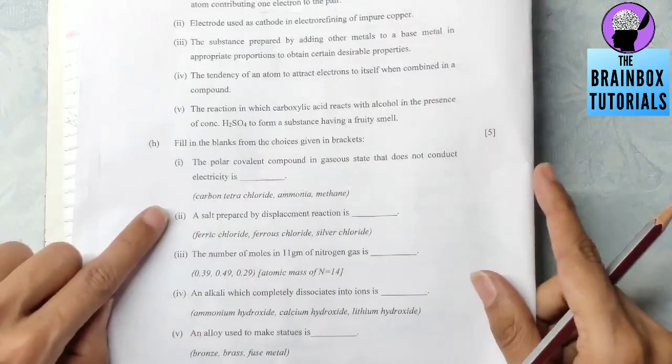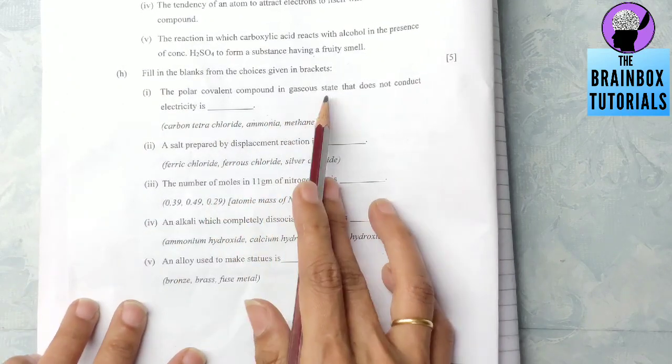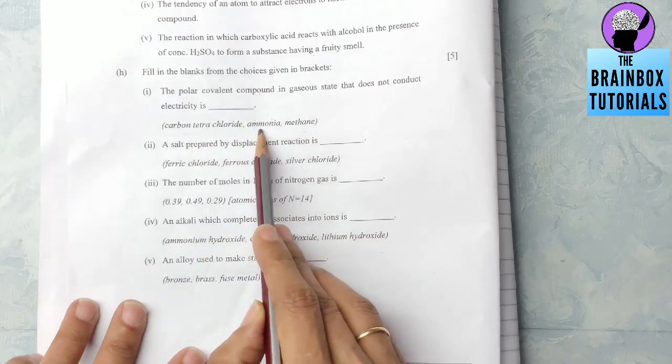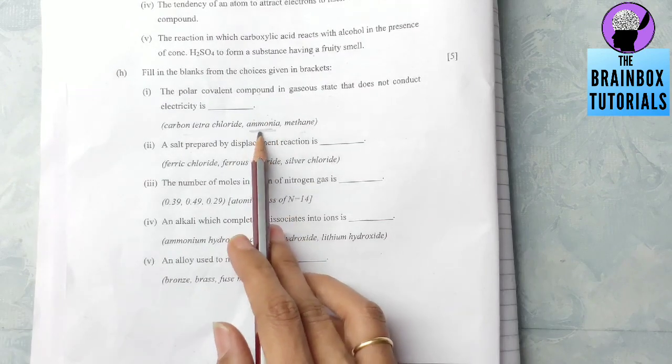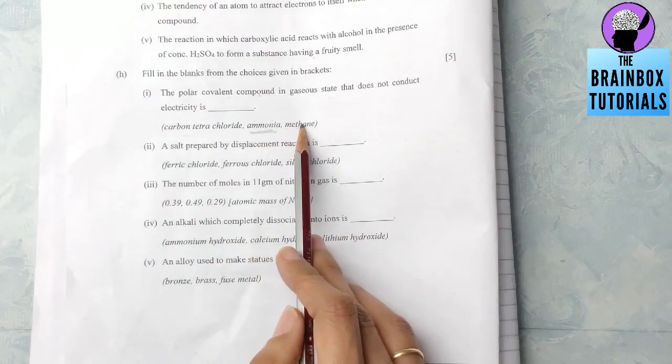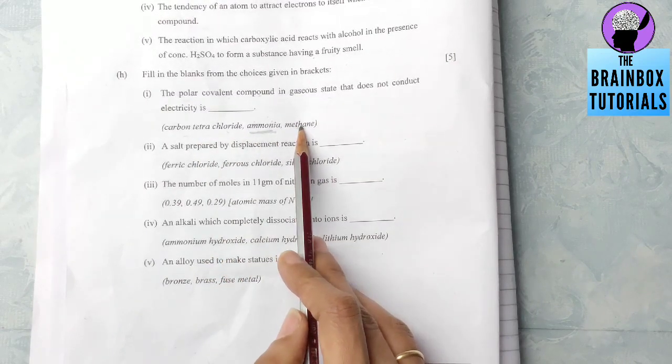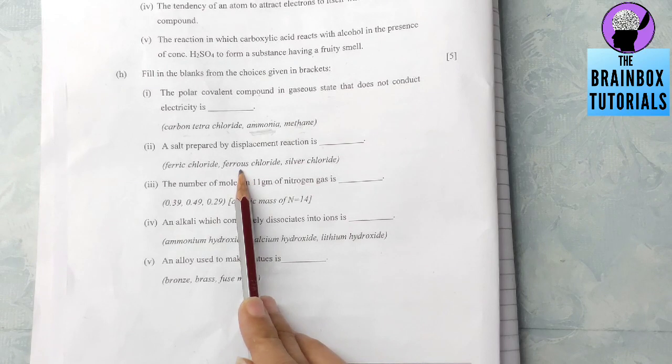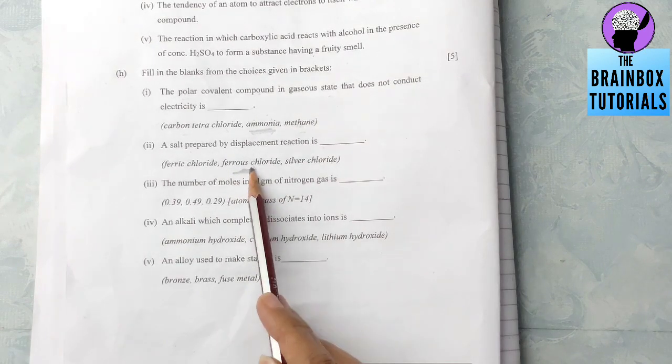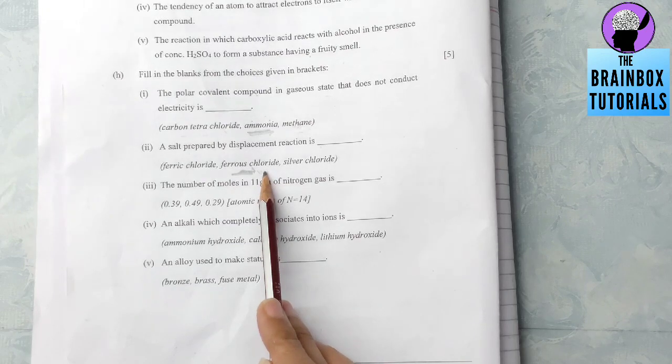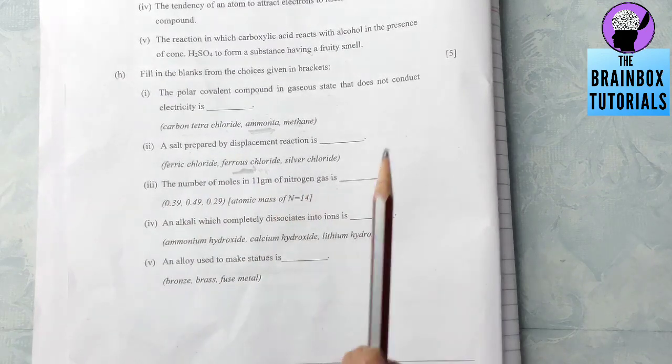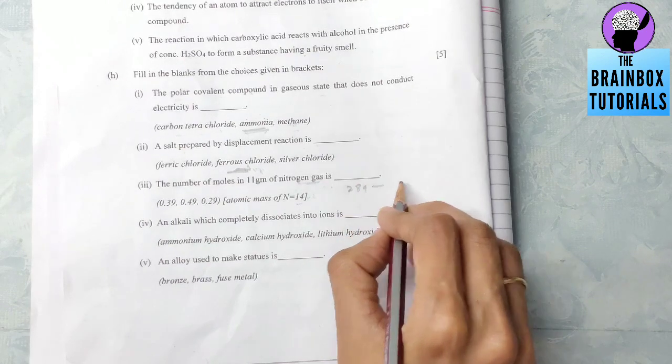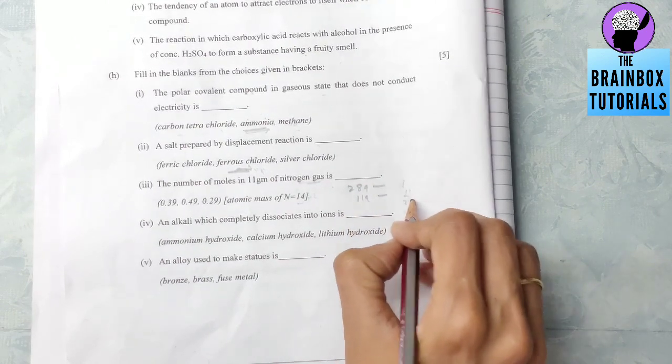Part H: Fill in the blank. The polar covalent compound in gaseous state that does not conduct electricity. Ammonia is polar covalent and in gaseous state, so ammonia is the answer. Number two: a salt prepared by displacement reaction. This would be ferrous chloride - Fe plus HCl gives FeCl2. Number three: number of moles in 11 gram of nitrogen gas. Nitrogen gas molecular weight is 14 into 2, that is 28. So 28 gram contains 1 mole, then 11 gram will contain 11 by 28. When you solve this, the answer is 0.39.